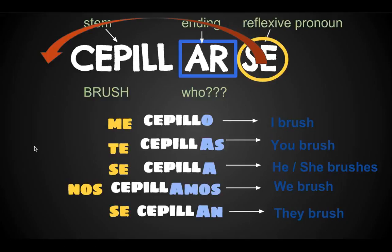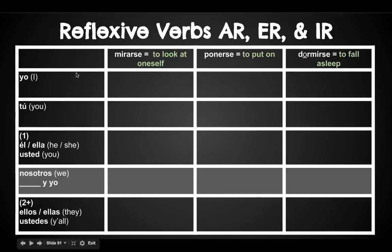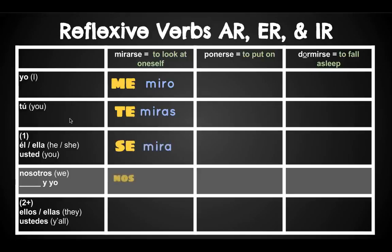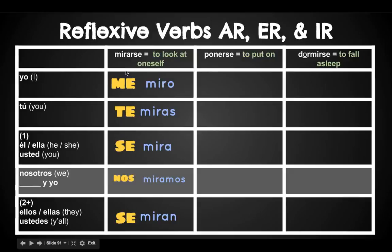Let's check out these verbs in a chart so we can see the pattern of how these are working. 'I look at myself' would be: me miro, te miras, se mira, nos miramos, se miran. So the same endings that we're used to — the only extra piece are these reflexive pronouns.